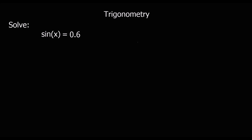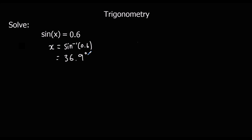This video is about solving trigonometric equations. Here we've got a question: sin x equals 0.6. We can use our calculator to get an answer by doing the inverse of sin. To get x by itself, we do arc sin 0.6 — in our calculator we press shift sin 0.6 — and to one decimal place we get 36.9 degrees.